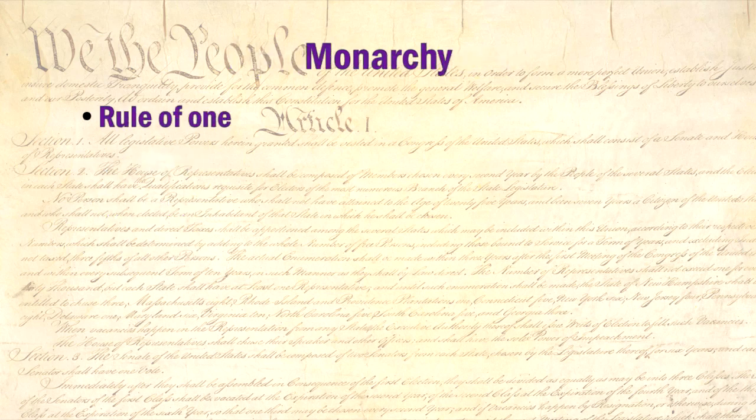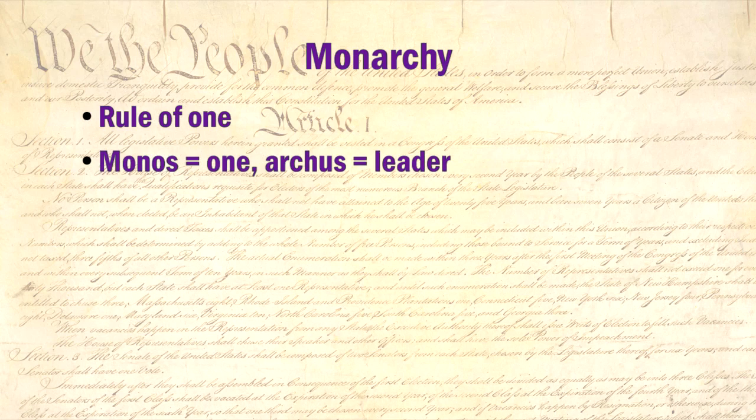We'll start with monarchy. This is when power is concentrated in a single individual — a king, a dictator, a despot, or whatever. It comes from the Greek monos, meaning one, and archos, meaning leader. So a monarchy is when there is one and only one leader. Obviously, this is the kind of government the founders rebelled against, specifically targeting most of their complaints against the monarch, King George.